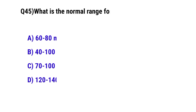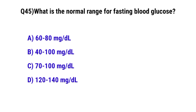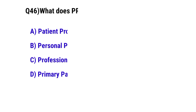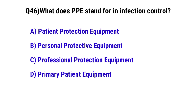Question No. 44: The inflammation of the liver is known as — the correct option is B: hepatitis. Question No. 45: What is the normal range of fasting blood glucose? The correct option is C: 70 to 100 milligrams per deciliter.